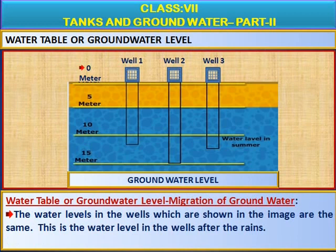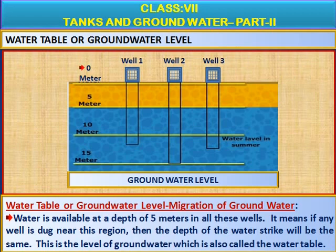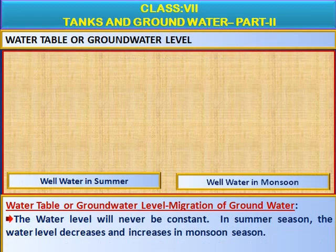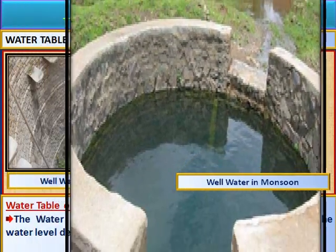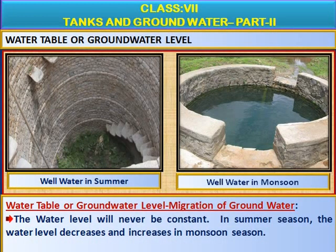The water levels in the wells shown in the image are the same. This is the water level in the wells after the rains — water is available at a depth of 5 meters in all these wells. If any well is dug near this region, the depth of the water strike will be the same. This level of groundwater is also called the water table. The water level is never constant — it decreases in summer and increases during monsoon season.